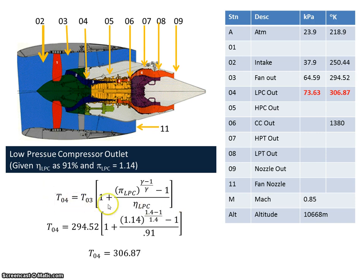I can use the identical formula as I had for the fan, just change the station numbers. I'm going to use a compression ratio of 1.14 and the efficiency of 0.91, and we're going to use our 294 from here in at station 3. If we multiply all that out, we get the temperature at the output of the low pressure compressor is 306.87 degrees Kelvin.